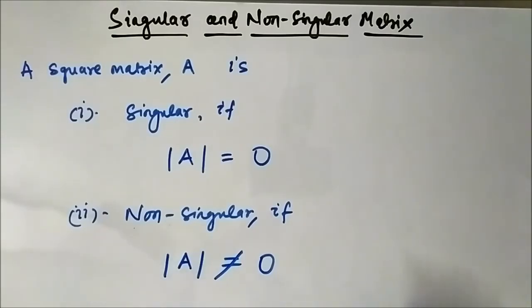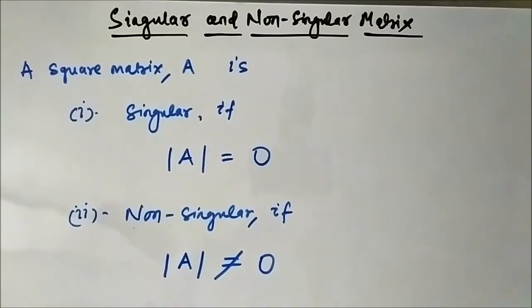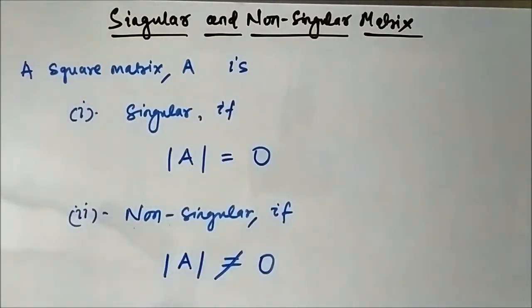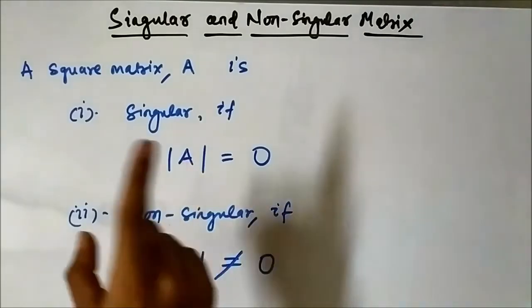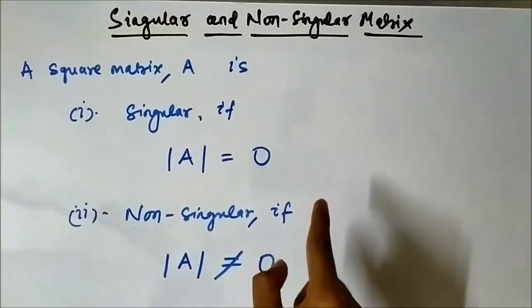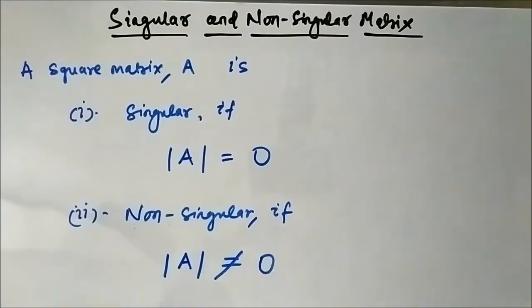The singularity and non-singularity of matrices plays a huge role in solving linear equations — to determine the number of solutions, the consistency of the linear equations, if they have any linear relationship between them, and the rank of a matrix. We will discuss that in detail in other videos, but this video we will just focus on singular and non-singular matrix. So, a singular matrix is one whose determinant is equal to 0, and non-singular is one whose determinant is not equal to 0.